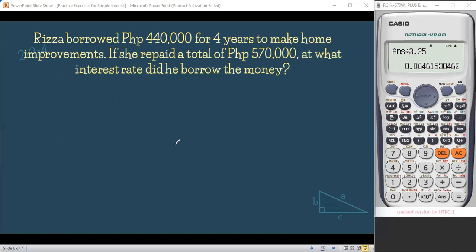Riza borrowed 440,000 for 4 years to make home improvements. She repaid a total of 570,000 pesos. At what interest rate did she borrow the money? So what's being asked here is the interest rate. So R is missing in this problem. And it says, Riza borrowed 440,000. So 440,000, what is it? That is the principal because it's the initial amount borrowed. So that is 440,000 pesos is our principal. Now, for the time we have 4 years. And what? So there's another given here. If she repaid a total of 570,000 pesos. So 570,000 pesos is the future value now.